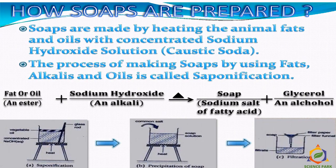How are soaps prepared? Soaps are made by heating animal fats and oils with concentrated sodium hydroxide solution — sodium hydroxide is known as caustic soda. This process of making soaps using fats, alkalis, and oils is called the saponification process.